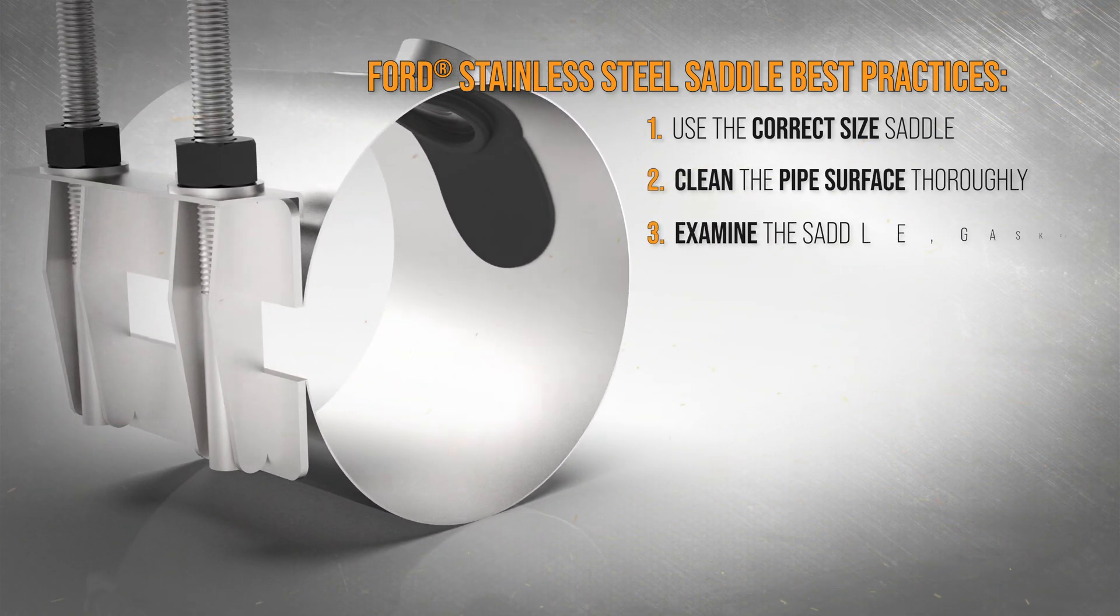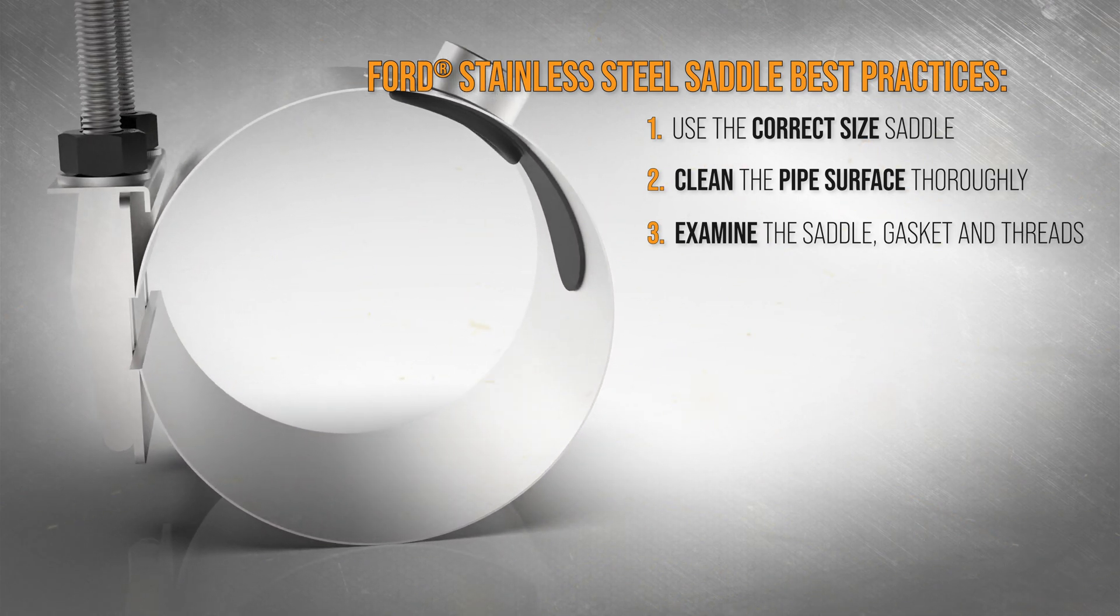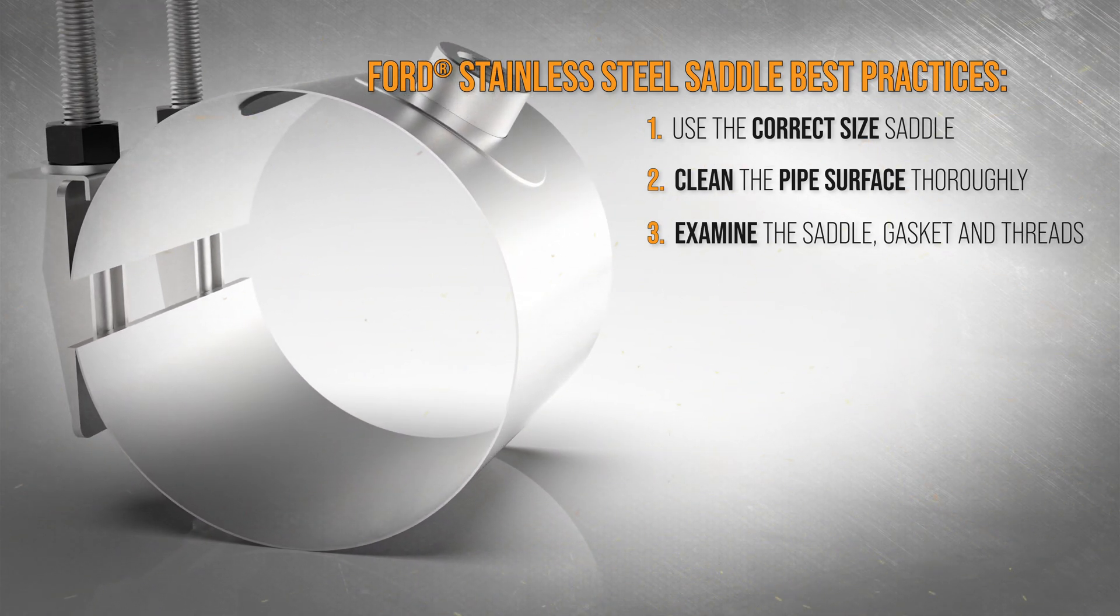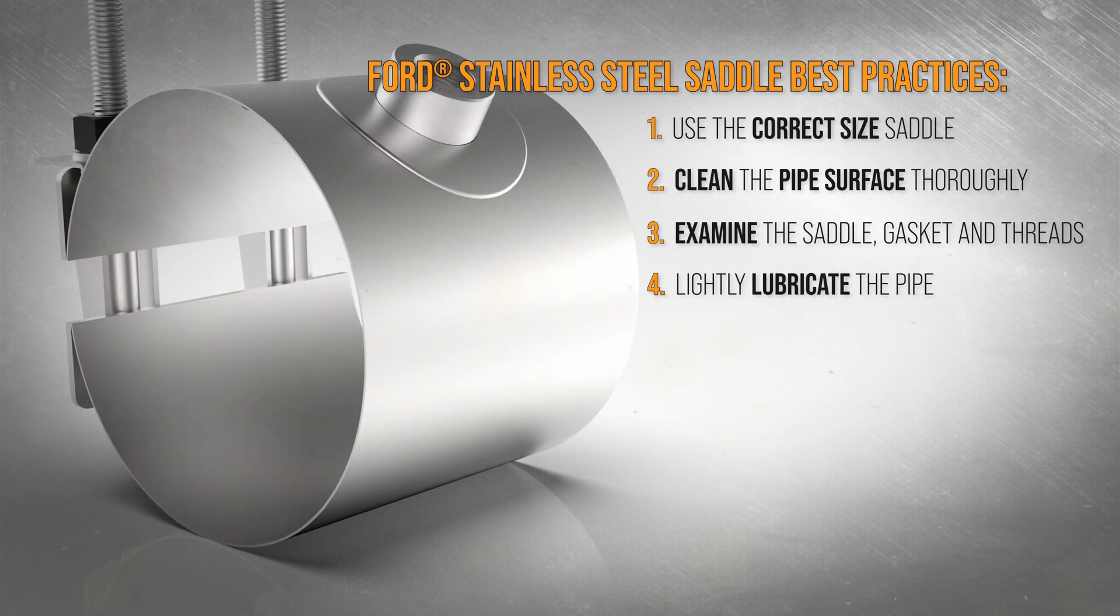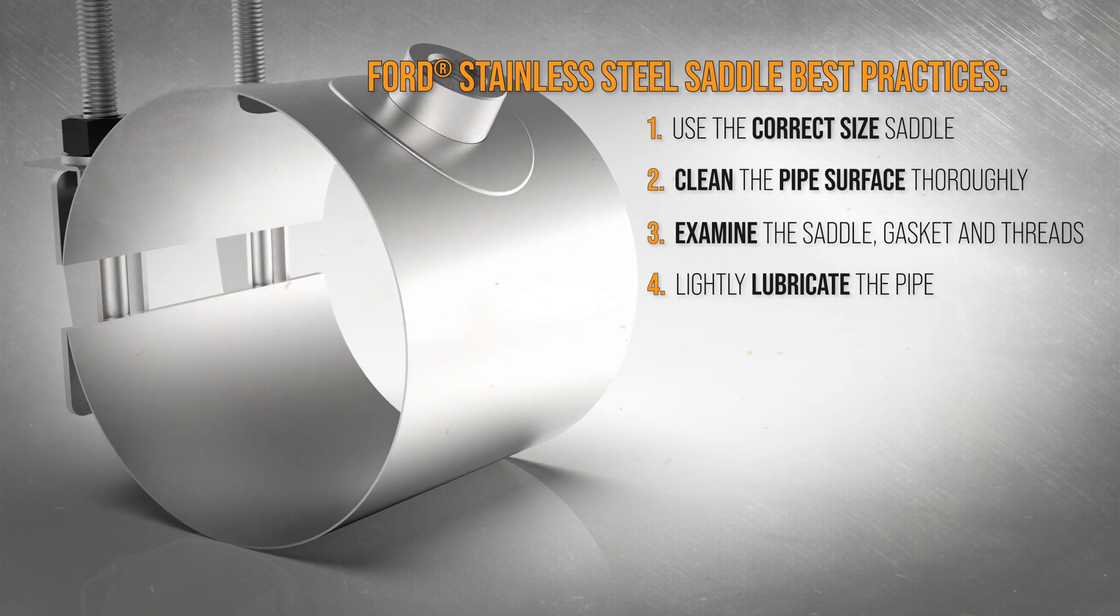Examine the saddle gasket sealing surface and the clamping stud threads for debris or damage. Lightly lubricate the pipe under and beyond the gasket contact area with a thin coating of pipe joint lubricant.